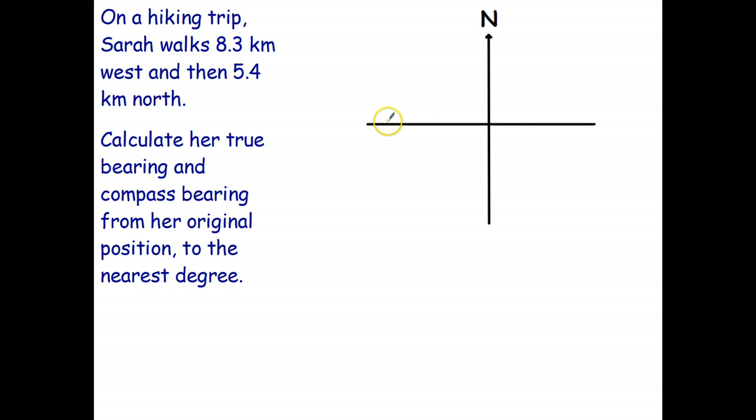Okay so once again the first thing you have to have is your compass. So your north line and your east west line. So let's go ahead and start to create the diagram or finish the diagram. On a hiking trip Sarah walks 8.3 kilometers west. So she walks in that direction and 5.4 kilometers north. So 8.3 kilometers and 5.4 kilometers. And let's complete the triangle like so.